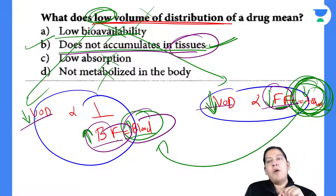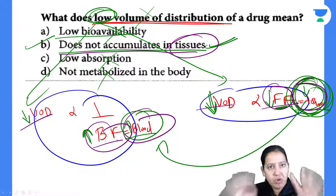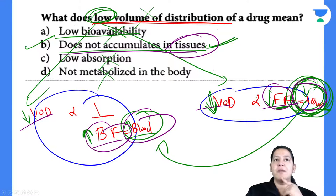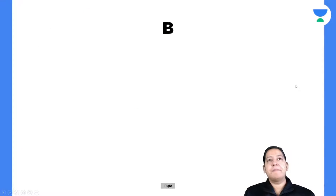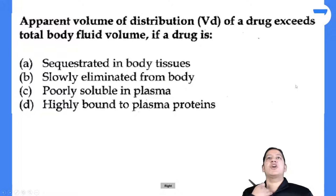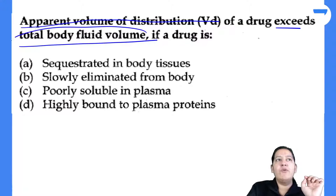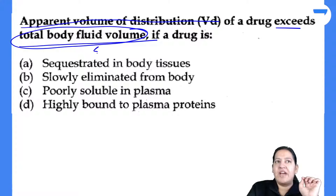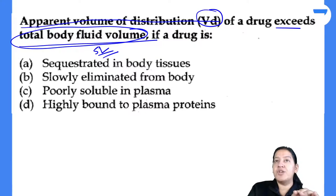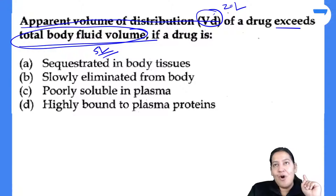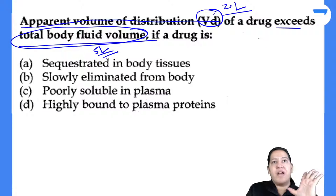If free form is high, it goes into the tissue. Less stays in the blood. So the drug is sequestered in the tissue — that is why volume of distribution exceeds 5 liters. Correct answer is A — sequestered in the tissue — not D (highly bound to plasma protein). Less bound form means more free form means more tissue concentration. Kuldeep and Sana answered correctly.